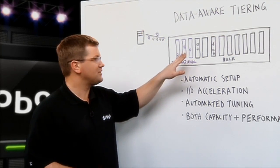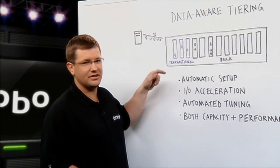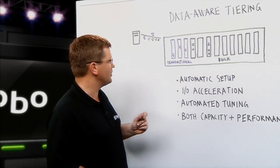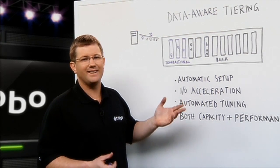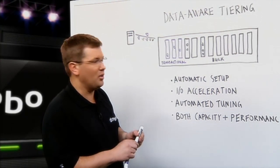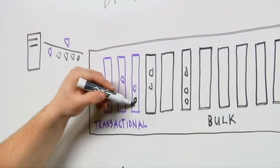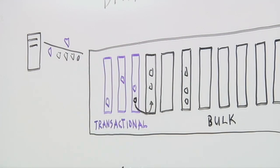But over time, when Drobo thinks this transactional data we're going to put on the SSDs because it needs to be accessed very quickly, what if over time it's not really accessed that quickly and the data becomes what we call cold, it's not hot anymore. If that data becomes cold, it will be automatically migrated over onto a hard disk drive.